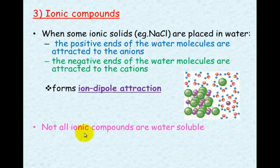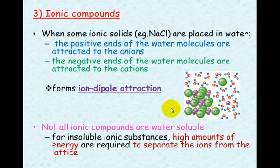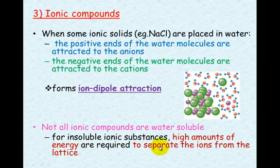Be careful, though — not all ionic compounds are water soluble. The water needs to be more attracted to the ions in the lattice than the ions are to themselves. If those ions have greater attraction to one another, they won't let go for the water molecules. Think of it like relationships: if you're in a good relationship, you don't look at other people trying to get your attention. For insoluble ionic substances, high amounts of energy are required to separate the ions from the lattice.